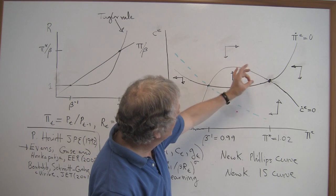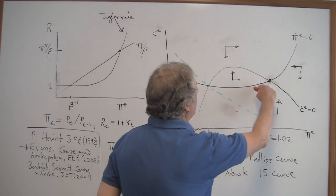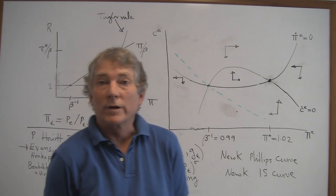So, any point in here, if you give me initial expectations that are, say, at this point here, following the phase diagram, you can see it converges into the targeted steady state. So, the Taylor Rule works locally.